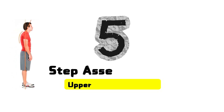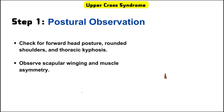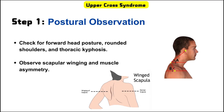Let's go step by step through a comprehensive upper crossed syndrome five-step assessment using Janda's principles. Step one is postural observation. Check for forward head posture, rounded shoulders, and thoracic kyphosis. Observe scapular winging and muscle asymmetry.